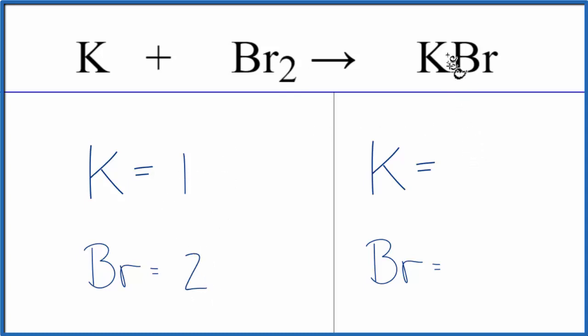On the product side of the equation, we have one potassium and one bromine. To balance chemical equations, we can change the numbers in front, the coefficients. We can put numbers in front, but we can't change the subscripts, these numbers afterwards.